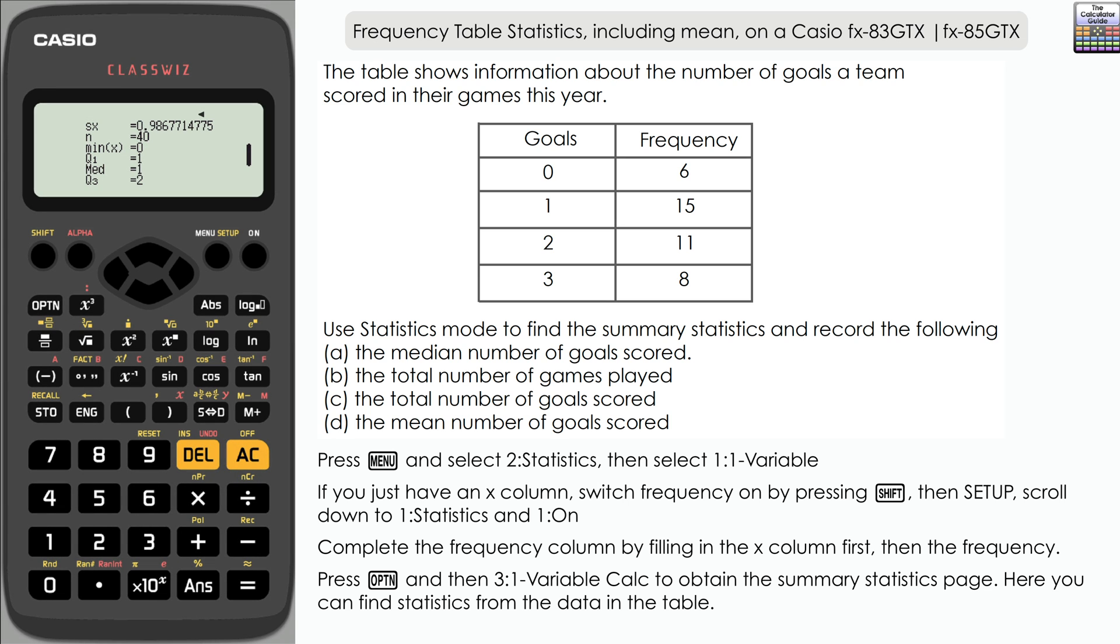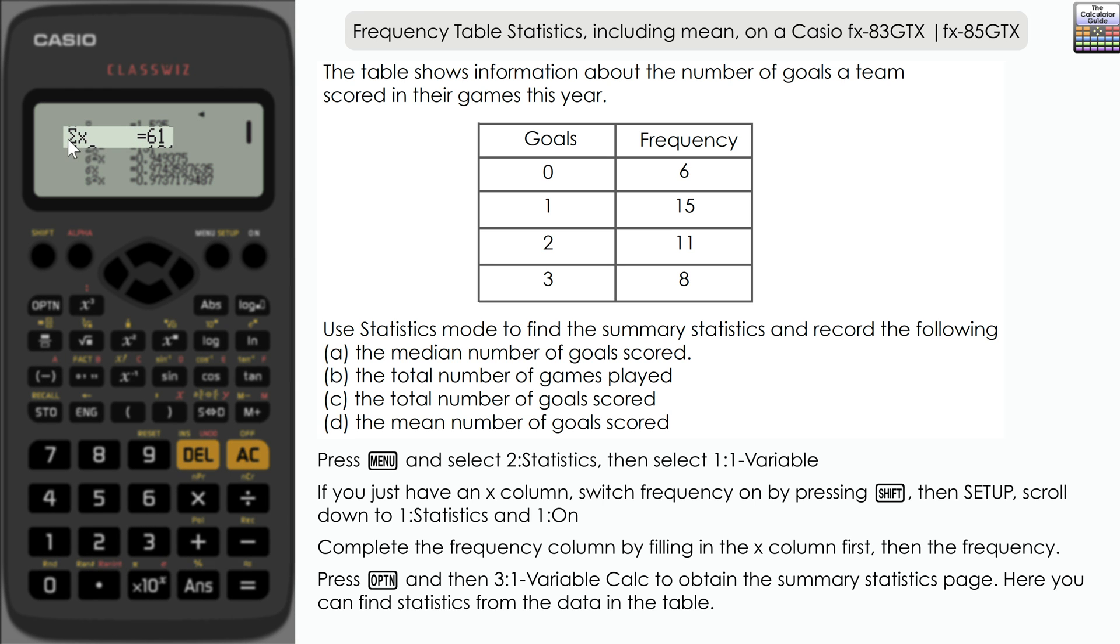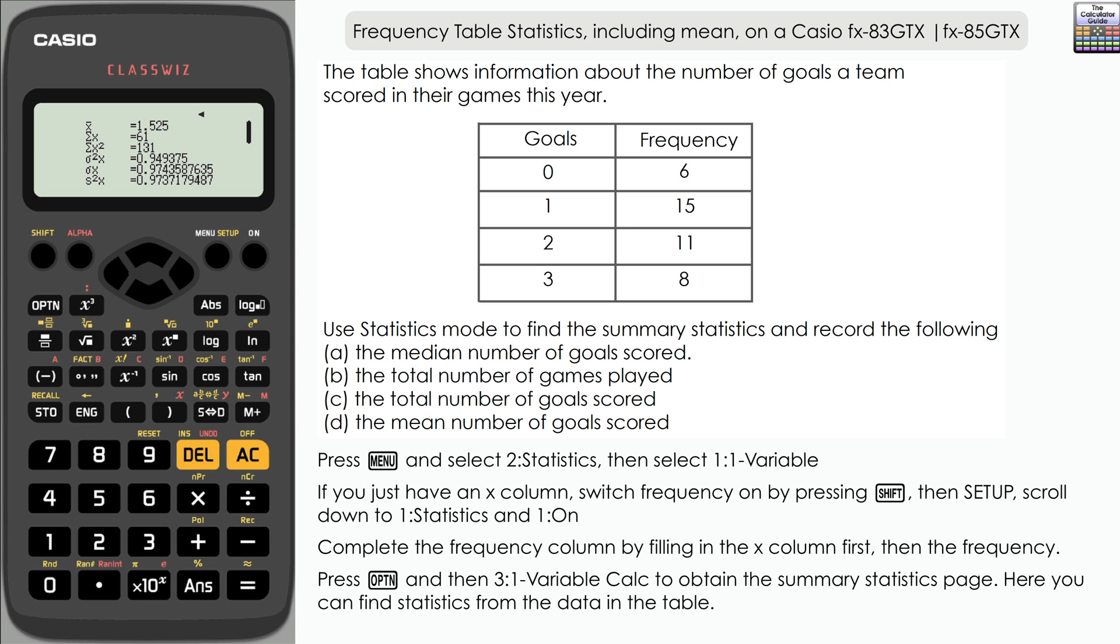Next we want the total number of goals scored. You could multiply the goals in each row by the frequency - often in an extra column. 0 times 6 is 0, 1 times 15, 2 times 11 is 22, 3 times 8 is 24, then total up that column. However, the calculator will do that for us. It's the second option - the sum of x (sigma x) which equals 61.